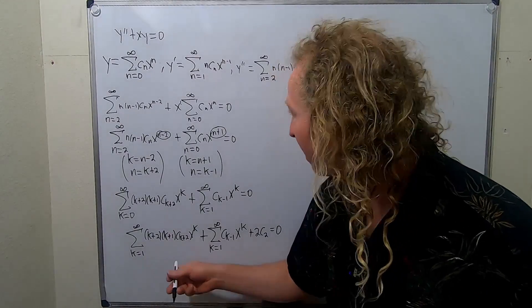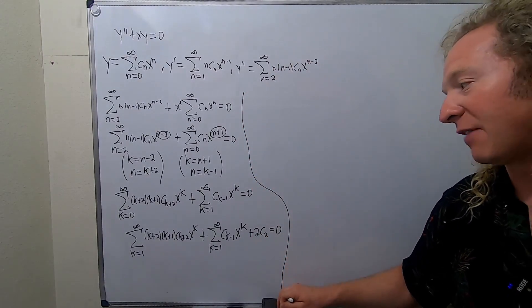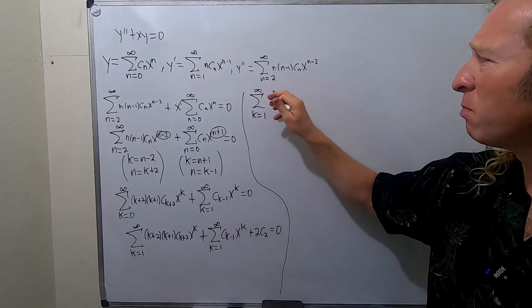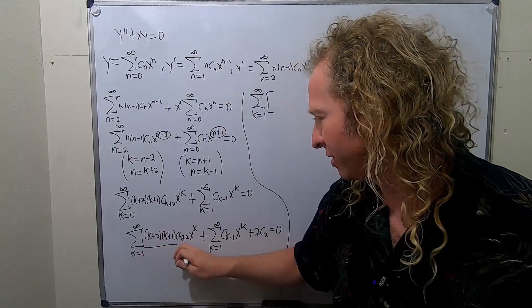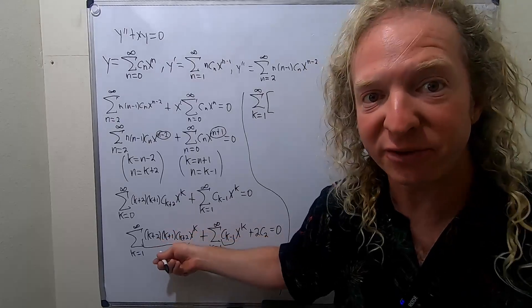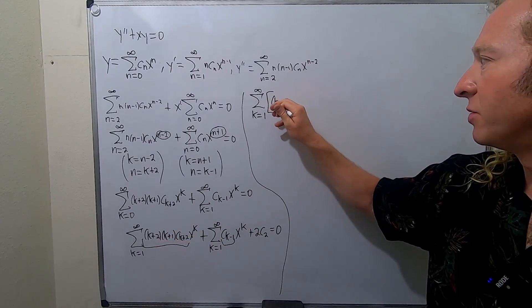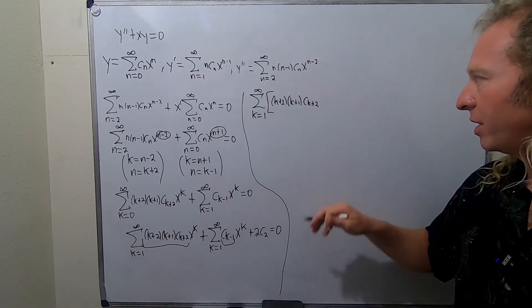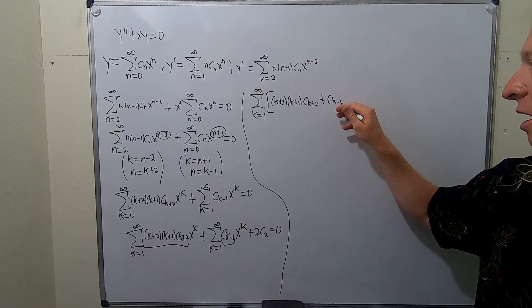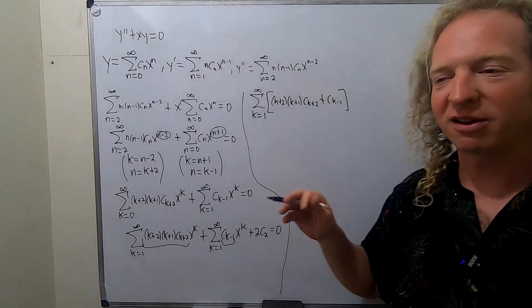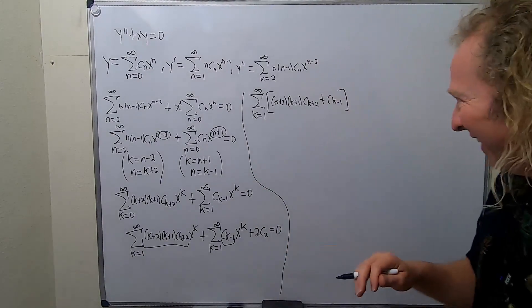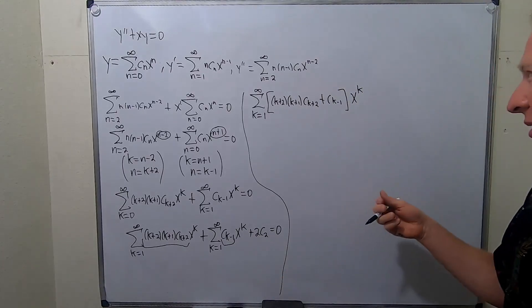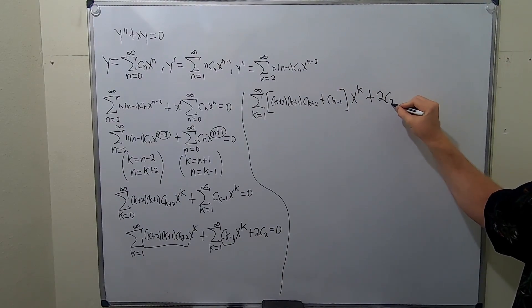Now we can combine these. We have the infinite sum from k=1 to infinity, and we factor out x^k, leaving [(k+2)(k+1)·c_{k+2} + c_{k−1}]·x^k, plus 2c₂ = 0. It's really easy to mess up here — I've messed up these problems before making videos and had to delete 20 minutes of work.